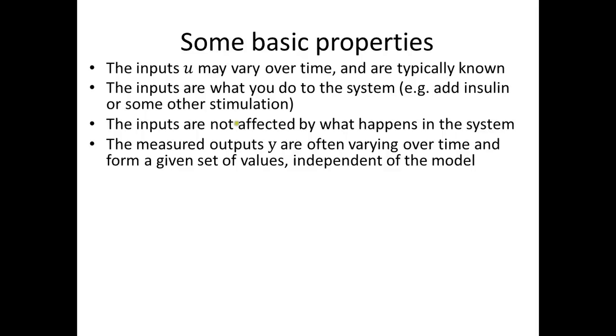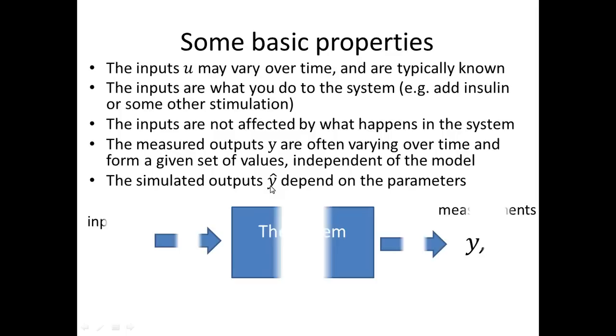The inputs go into the system, and then you have these two outputs. The measured outputs are also typically varying over time because they usually depend on the states or the reaction rates or something like this. These are just a given set of values, and they are independent of the model. If you change things in the model, the experimental data will be the same. But the simulated output, on the other hand, depends on all the assumptions that you have and on all the parameter values that you choose. So if you change parameters, usually y-hat changes. Y-hat is a function of the parameters.